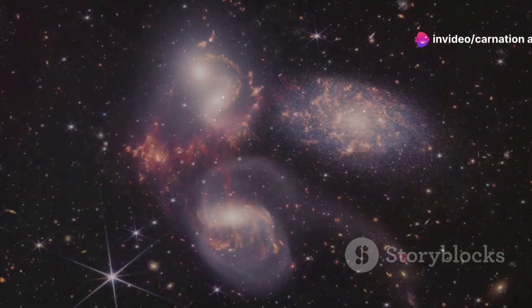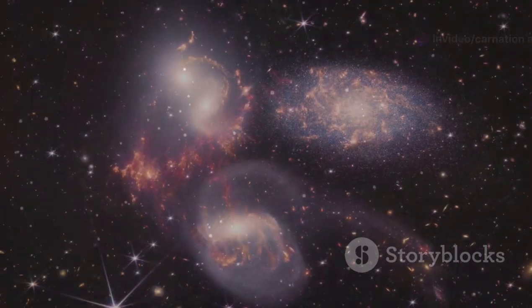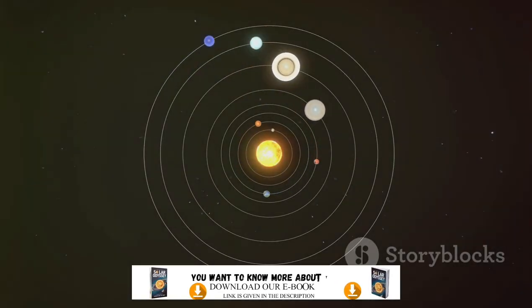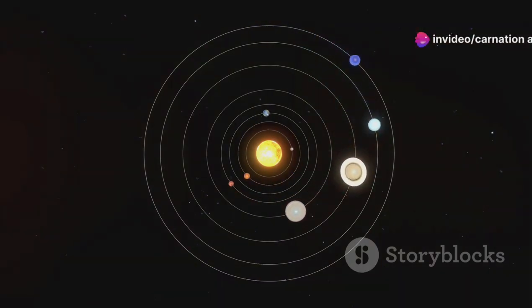After millions of years of collisions, mergers, and gravitational interactions, the solar system we know today came into being. The planets settled into their orbits, and the remaining debris formed asteroids, comets, and other small bodies.